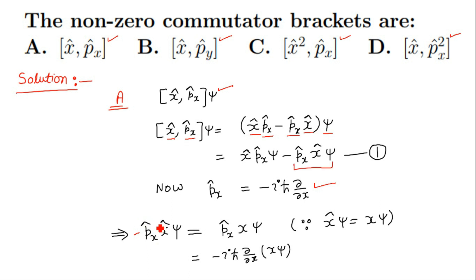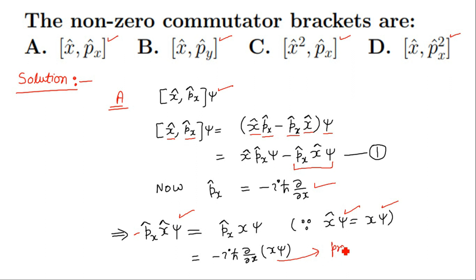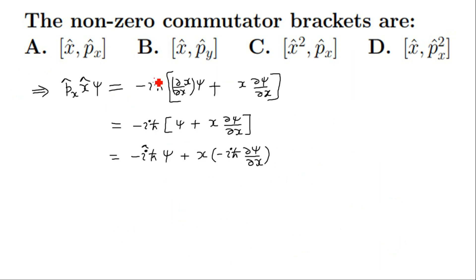Therefore p-x-cap x-cap psi equals p-x-cap times x-psi, because x-cap psi is actually x psi. Putting the value of p-x-cap, which is minus iota h-cross del by del x, acting on x psi, we apply the product rule. This gives minus iota h-cross times del x by del x times psi plus x times del psi by del x.